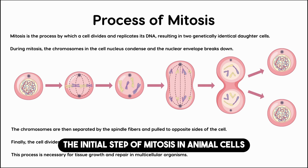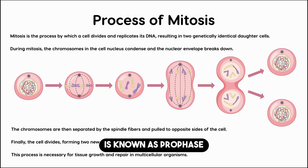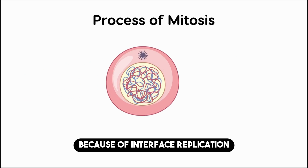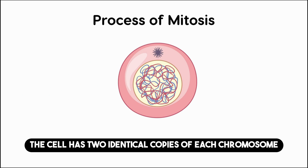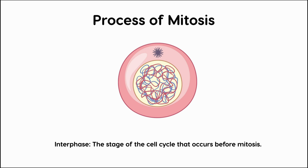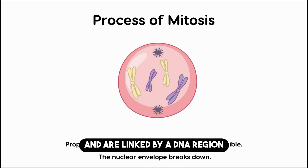The initial step of mitosis in animal cells and the second stage of mitosis in plant cells is known as prophase. Because of interphase replication, the cell has two identical copies of each chromosome at the start of prophase. These copies are known as sister chromatids and are linked by a DNA region known as the centromere.